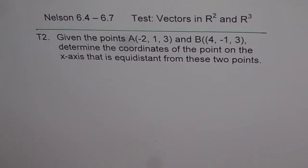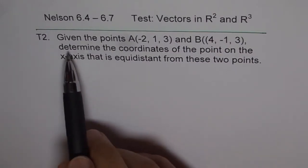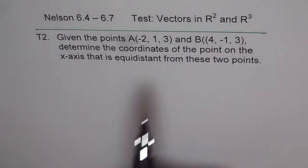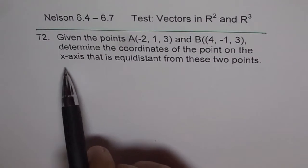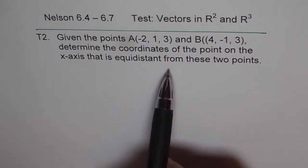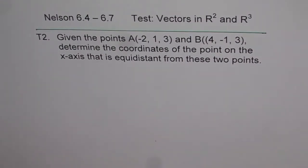And I hope you feel more prepared for the test now. Question 2, thinking question: given the points A and B, determine the coordinates of the point on the x-axis that is equidistant from these two points. So that is the question.